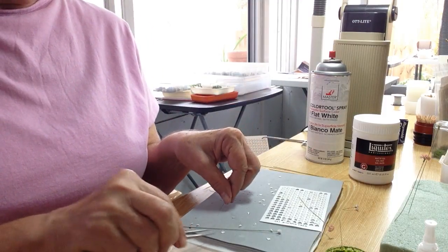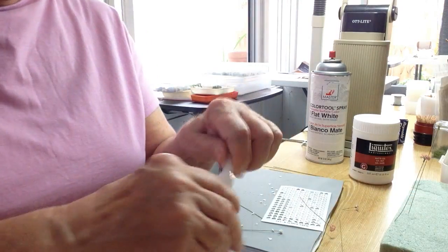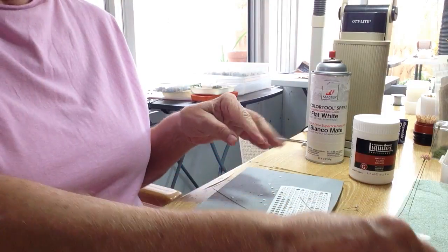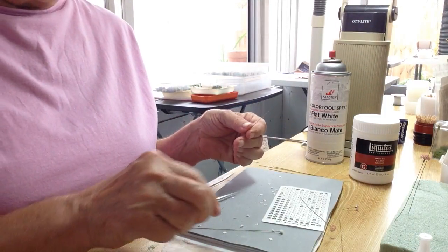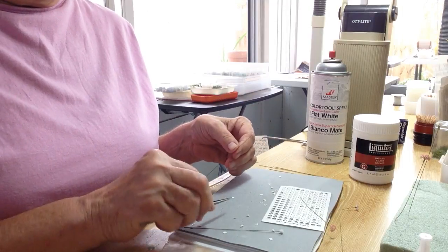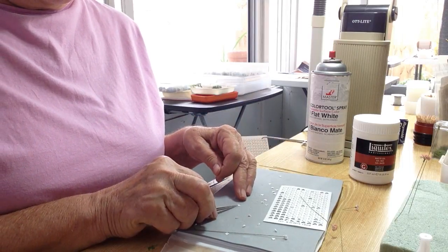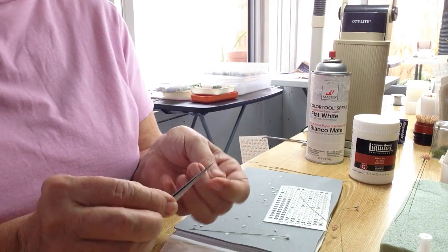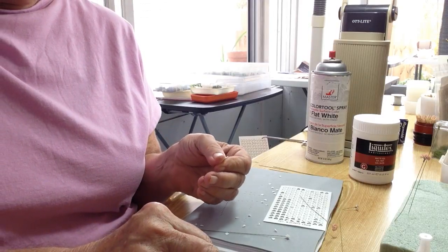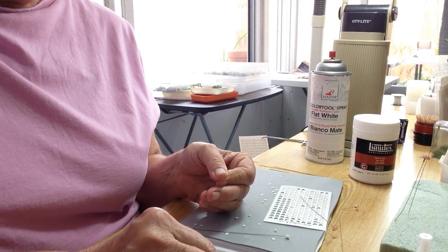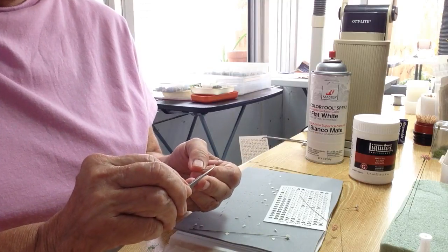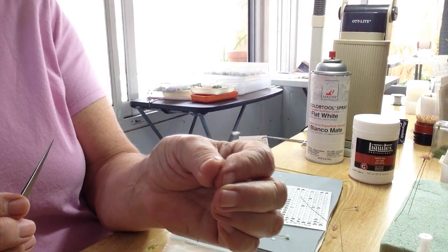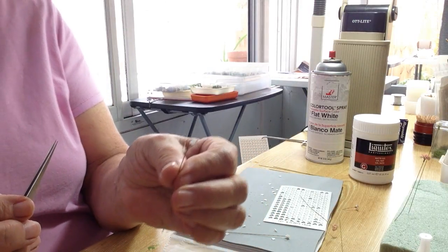Now this one I am going to use the Zap-A-Gap because it needs to be bonded instantly. So I bend over the little point, dip it in a little bit of white glue, a little bit of Zap-A-Gap, and right on the edge of the tip of the wire.